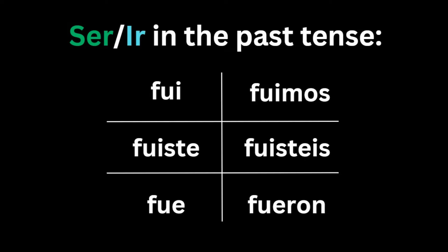Fuiste can mean you went somewhere or to do something, and also you were in a position somewhere. Fue can mean he or she went, and it also has a ubiquitous use of it was in Spanish, making it one of the most useful words in the past simple tense. Fuimos means we went or we were, fuisteis means y'all went or y'all were, and fueron can mean they went or they were.